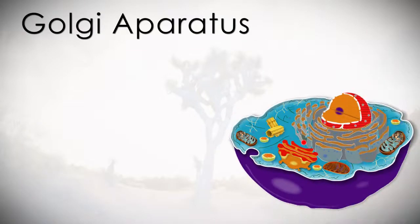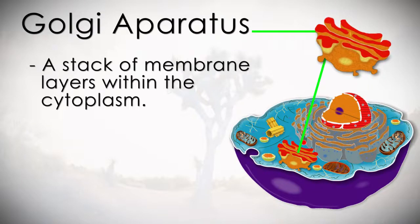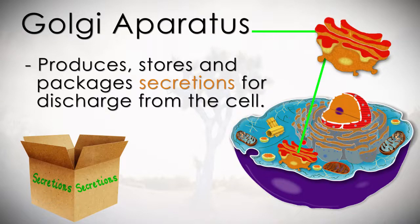Next is the Golgi apparatus. This is a stack of membrane layers within the cytoplasm. It produces, stores, and packages secretions for discharge from the cell.